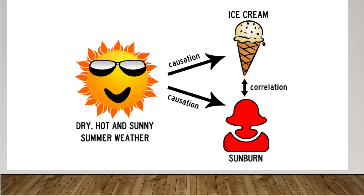Here is an example of causation. We know that if it is sunny outside in the middle of summer, in the middle of July, and it's sunny outside, we know that our ice cream is going to melt. The hot temperature causes our ice cream to melt. The hot temperature also causes our skin to get a sunburn. So those are two examples of causation — the sun causes the ice cream to melt, the sun causes us to get a sunburn.